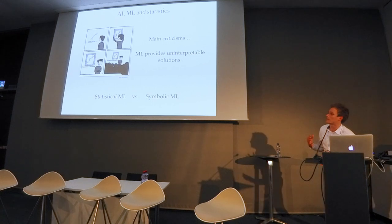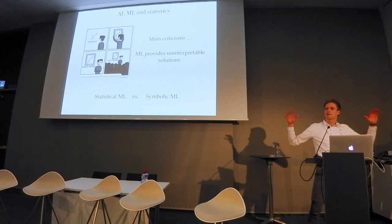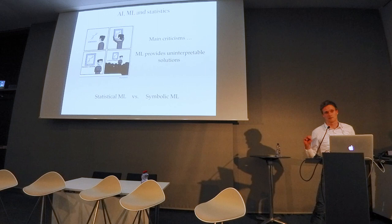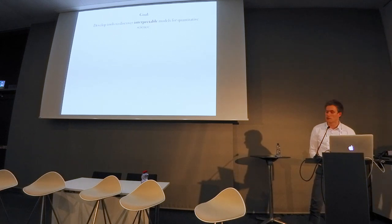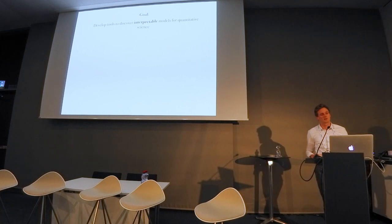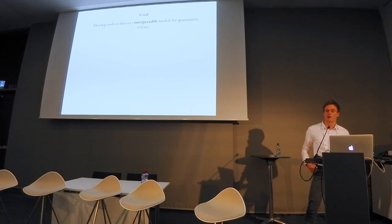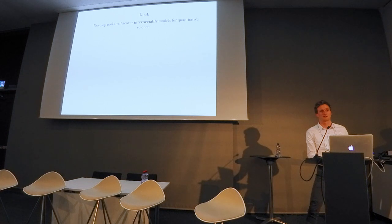This dichotomy is captured by two fields within machine learning: statistical machine learning and symbolic machine learning. The goal of our research group is to develop tools to discover interpretable models for quantitative science. The examples I will show will be mainly in the context of physics, but we also try to apply it to synthetic biology and developmental biology.